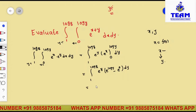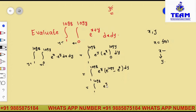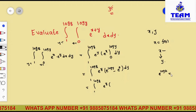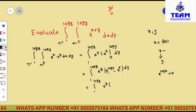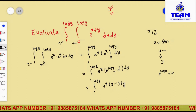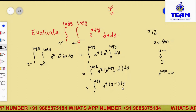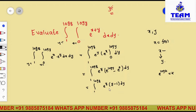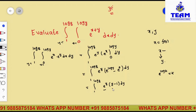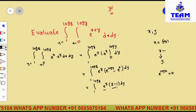Using the formula e to the power of log k equals k: e to the power of log y equals y, and e to the power of 0 equals 1. So this becomes: integral from 1 to log 8 of e to the power of y times (y minus 1) dy. The integrand is a product of two functions, so we cannot integrate directly — we must use the UV rule (integration by parts).